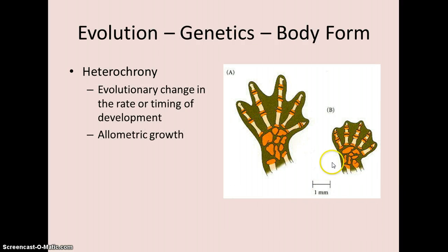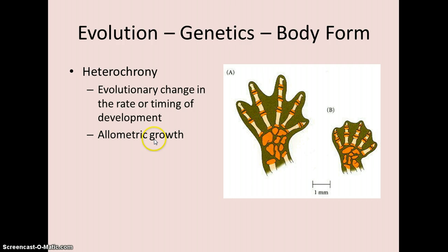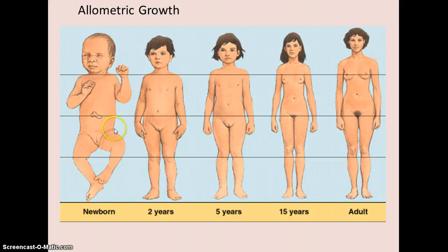Other things that can influence the evolution of species include heterocrony — a change in the rate of development. For example, within salamanders you see distinct fingers forming in the more evolved state, but some species have a different rate of development where fingers don't develop as much. This leads to what we call allometric growth, where parts of an organism grow at different rates. Babies are about one-fourth head, but as an individual grows, arms and legs grow at a faster rate than the head — that's allometric growth with differential growth rates for different body parts.